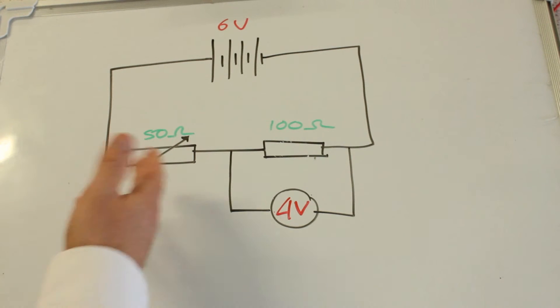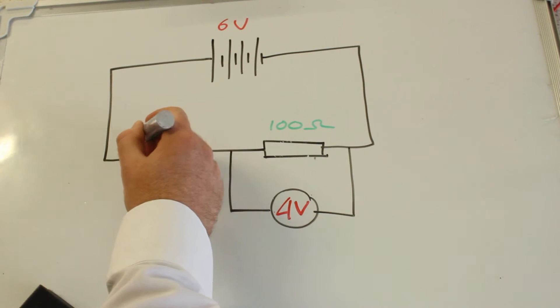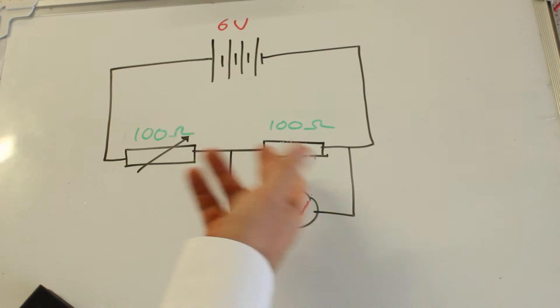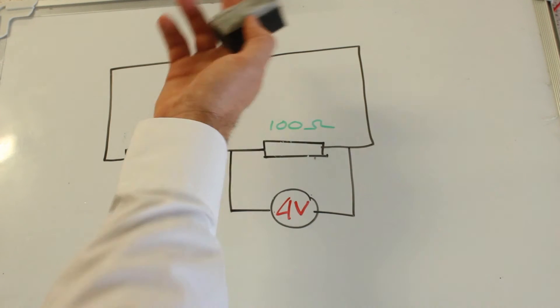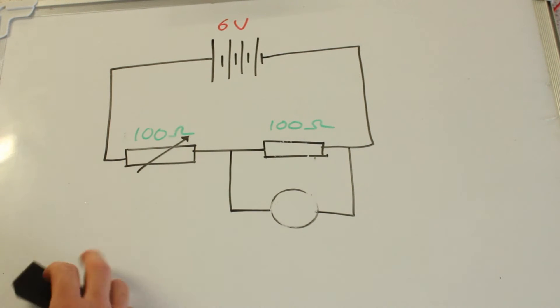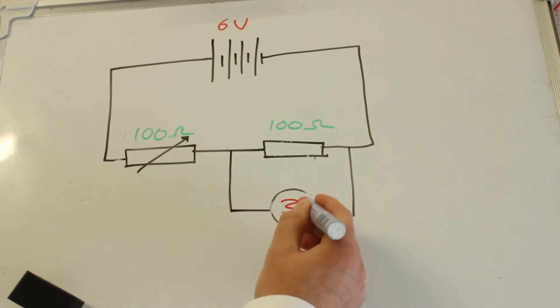If I increase that resistance then I can get that to a hundred, and the ratio is now one to one. And share out six in a ratio one to one means you've got three volts across here and three volts across here.